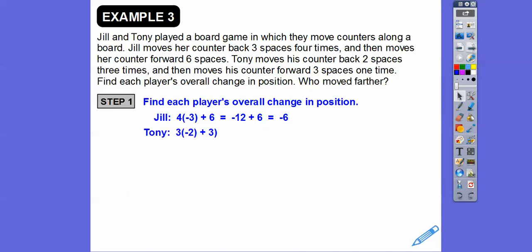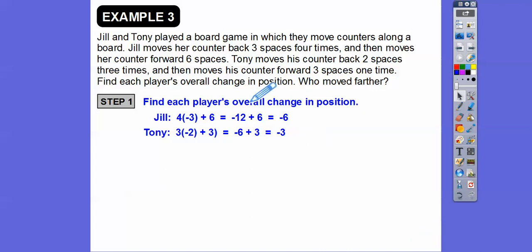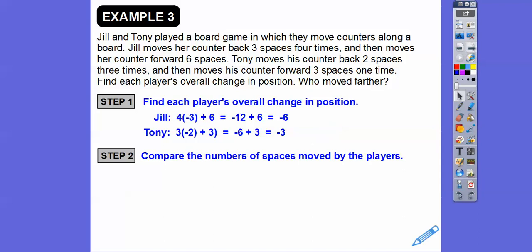Jill's expression: four times negative three plus six. Four times negative three is negative 12. Negative 12 plus 6 is negative 6. Her overall change is six spaces back. Tony's expression: three times negative two plus three. Three times negative two is negative 6. Negative 6 plus 3 is negative 3. Tony moved back three spaces. Jill moved further back than Tony.